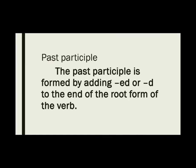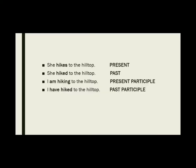And lastly, past participle. The past participle is formed by adding '-ed' or '-d' to the end of the root form of the verb. For example using the verb 'hike': Present — 'She hikes to the hilltop.' Past — 'She hiked to the hilltop.' Present participle — 'I am hiking to the hilltop.' Past participle — 'I have hiked to the hilltop.'